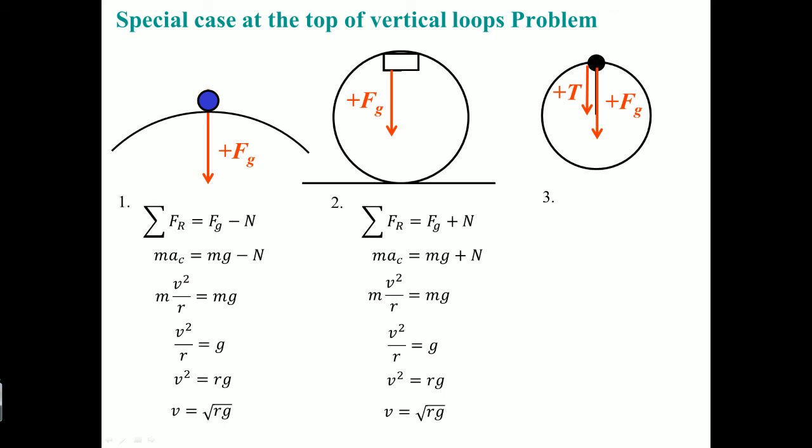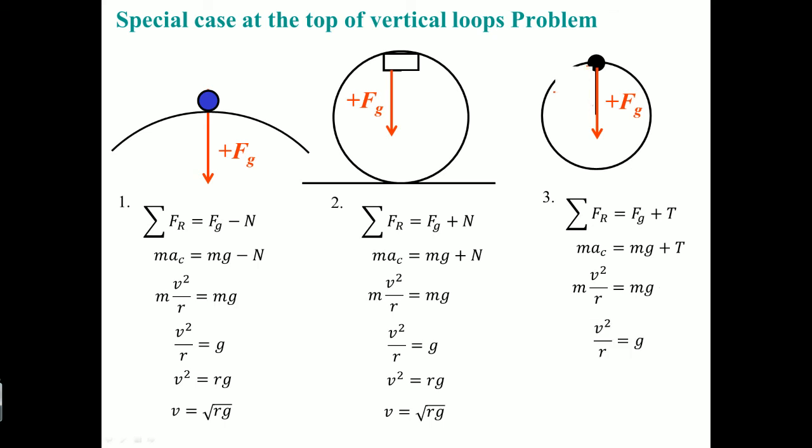For the third situation — tension pulling it down — it behaves the same way: Mg plus T equals MV²/R. At the particular speed where T disappears, it feels weightless, mass cancels, and V equals the square root of Rg. In all three scenarios, mass cancels and V equals the square root of the radius times gravity. This is the special case for when an object is on top of a vertical loop. That's all you need to know about centripetal force in the vertical direction.